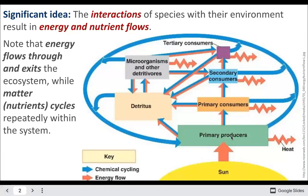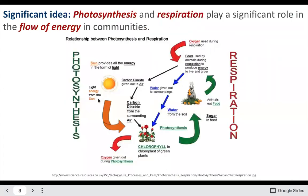Communities and ecosystems: the interactions of species in the environment result in energy and nutrient flows. Organisms exchange matter — we exchange carbon dioxide and oxygen as we breathe. We consume nutrients and then re-deposit them into the environment as well.